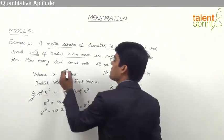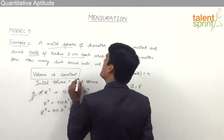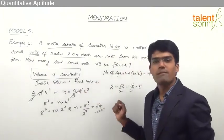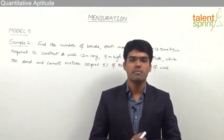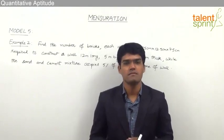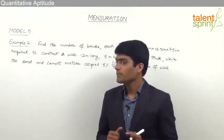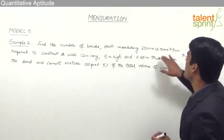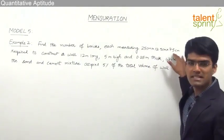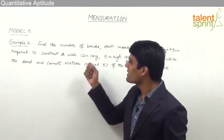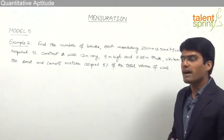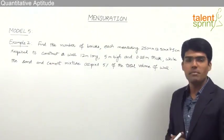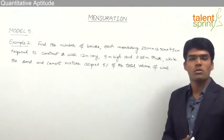This is how we use the concept of volume being constant whenever a solid is converted from one form to another. Simply apply: total initial volume equals total final volume. Let us now discuss another example from Module 5 of mensuration, again based on keeping the volume constant. The question says: find the number of bricks each measuring 25 cm × 12.5 cm × 7.5 cm required to construct a wall 12 meters long, 5 meters high, and 0.25 meters thick, given that the sand and cement mixture occupies 5% of the total volume of the wall.